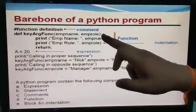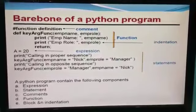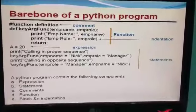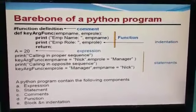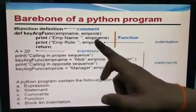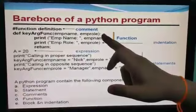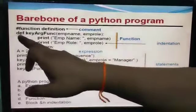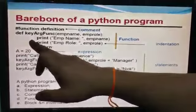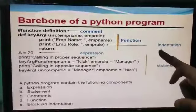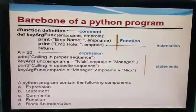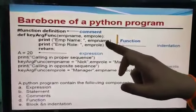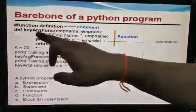After the colon, whenever we press Enter, the interpreter automatically provides some space. This is called indentation. You can see that after the colon, when we press Enter for the next statement, the interpreter automatically provides some space. This space is called indentation.